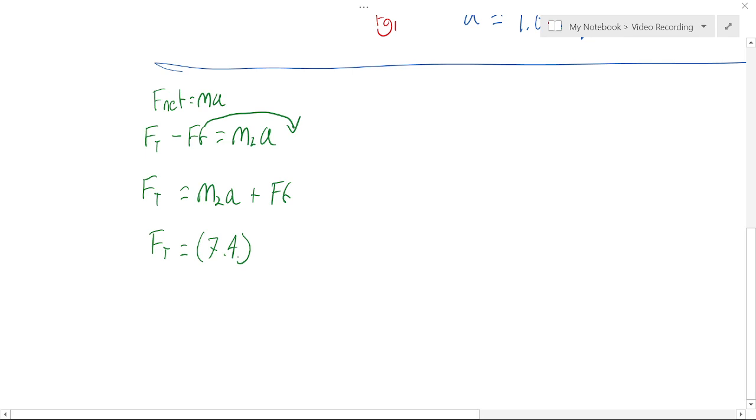7.4. The a we found in our previous question and the friction we also found in our previous question is 17.4 and we find the tension force is 29.4 newtons.